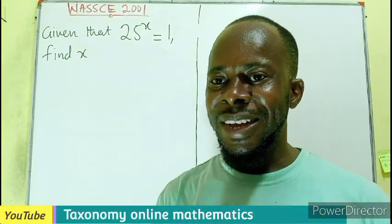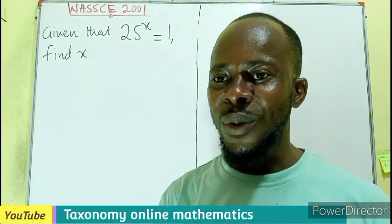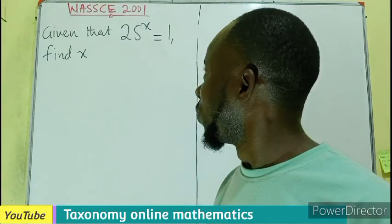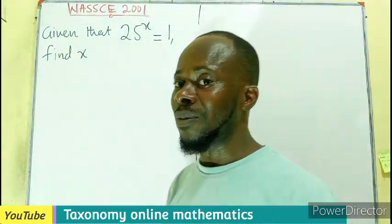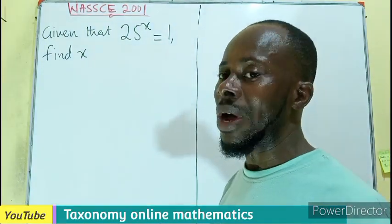A quick one for WASSCE 2001. We have to find the value of x given that 25 to the exponent of x is equal to 1.